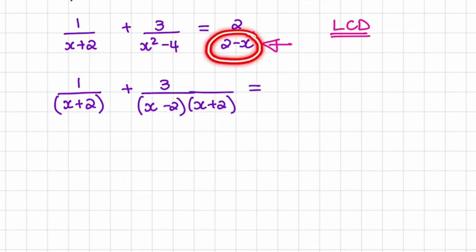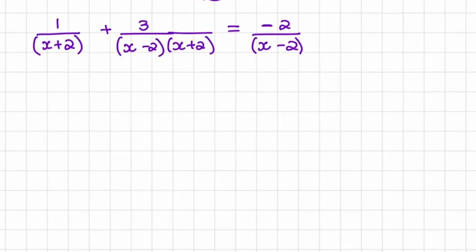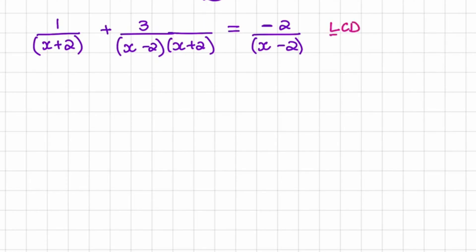Next, we need to deal with the 2 minus x. This is called the sign change rule. If I change the sign of the fraction to negative, it will allow me to swap these two positions, so x will become positive and the 2 would become negative. So looking at the denominators now, I would have x plus 2 and x minus 2, both repeated in the second term. So the lowest common denominator in this equation would be x plus 2 times x minus 2.